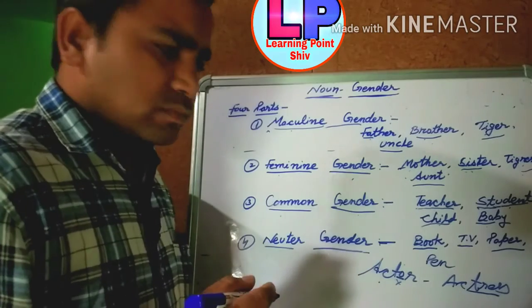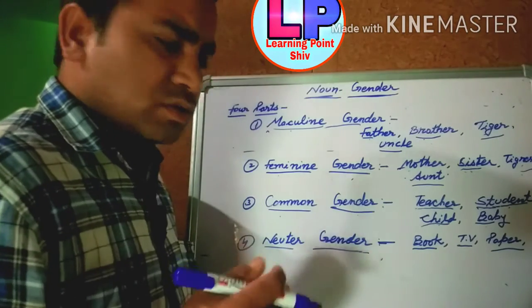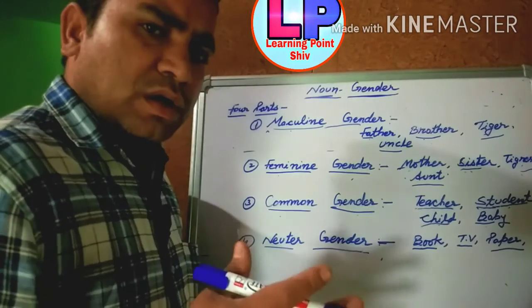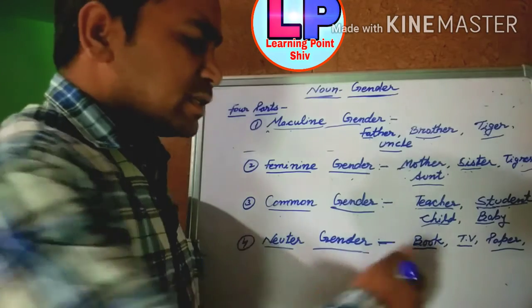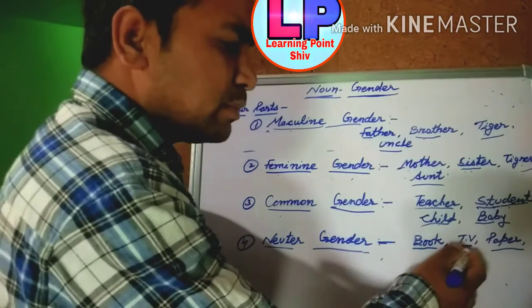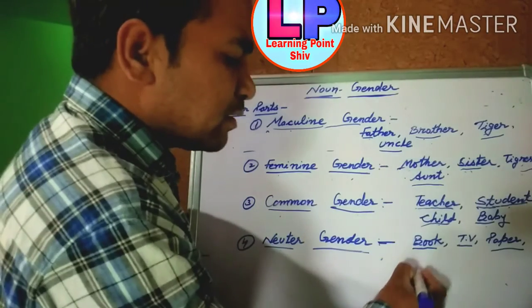Neuter gender — which are non-living things — such as books, TV, paper, pen.